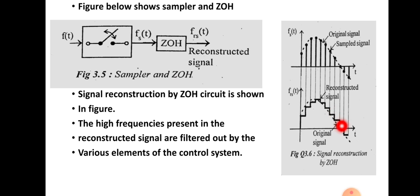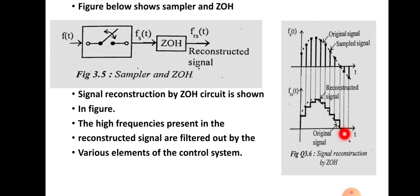This reconstructed signal will contain higher frequency information. This higher frequency component can be filtered out by using low-pass filters. Basically, the control system is a low-pass filter, so this higher frequency component is filtered out by various elements of the control system. This is the basic working of the zero-order hold circuit. That's all about hold circuits.